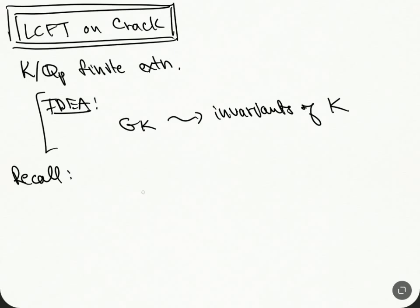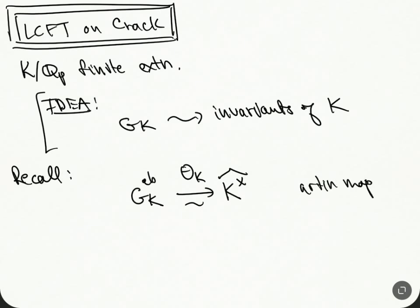Let's recall the following: there's an isomorphism given by the Artin map from GK abelianization to K× hat, the profinite completion of that group. Sometimes this is called θ(K). So this is the Artin map, and there's this isomorphism between these two groups. This can actually be extended a bit.